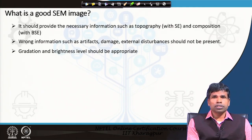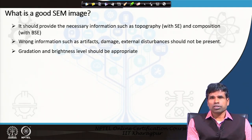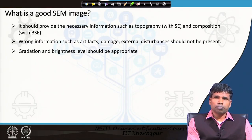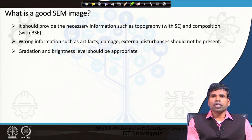Surface morphology is normally obtained with the secondary electron signal, because secondary electrons emerge from at or near the surface of the material. Therefore, they give us the best surface information with high resolution. On the other hand, backscattered electrons provide us the composition of the material, because the yield of backscattered electrons increases with increase in atomic number in the specimen.